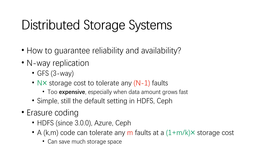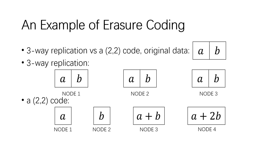To reduce storage cost, erasure coding can save much storage space at the same fault-tolerating level compared to n-way replication. In this example, the original data is divided into two parts, A and B. In three-way replication, all three nodes store both A and B, while in a (2,2) code, each node only stores one part, which is half of the original data.